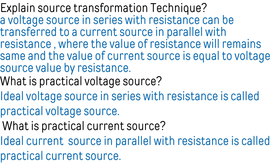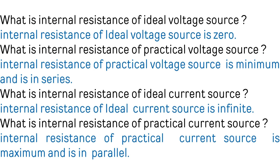What is a practical voltage source? An ideal voltage source in series with resistance is called a practical voltage source, or the voltage source which does not deliver a constant voltage with respect to current is called a practical voltage source. What is a practical current source? An ideal current source in parallel with a resistance is called a practical current source, or a practical current source is a source which does not deliver a constant current with respect to voltage.